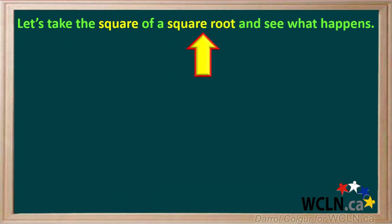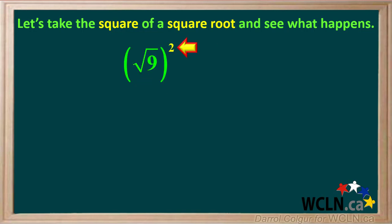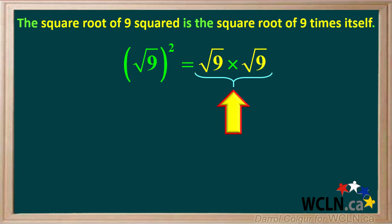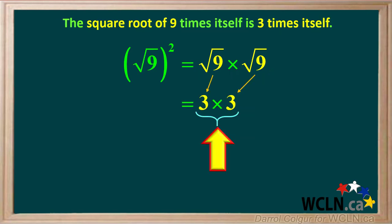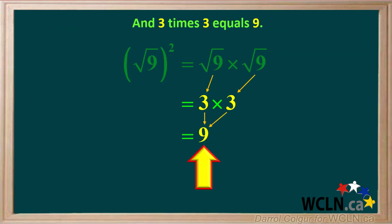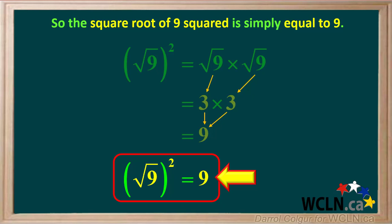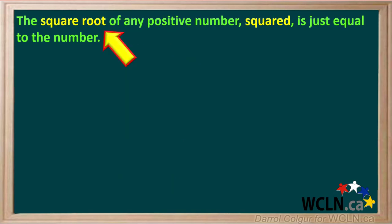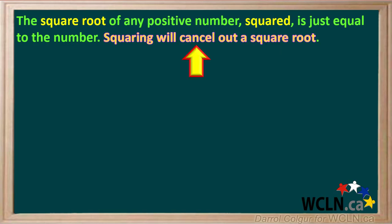Let's take the square of the square root and see what happens. We'll take the square root of 9 and square it. The square root of 9 squared is the square root of 9 times the square root of 9. Because the square root of 9 is 3, this is 3 times 3, and 3 times 3 equals 9. So the square root of 9 squared is simply equal to 9. We can generalize and say that the square root of any positive number, squared, is just equal to the number. In other words, squaring will cancel out a square root — squaring and taking the square root are opposites of each other.